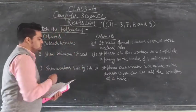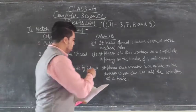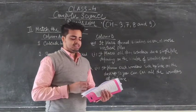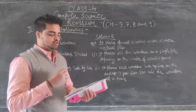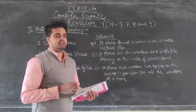Now third, show windows side by side. So it will match with option 2. So it places each window side by side on the desktop. So you can see all the windows at a time.